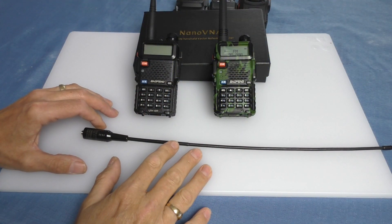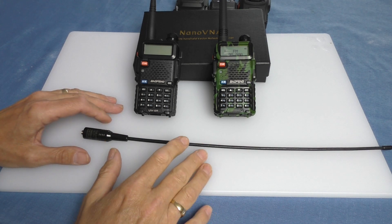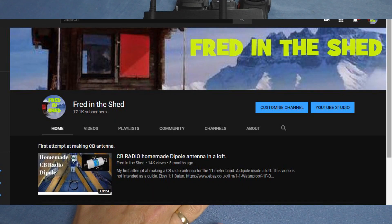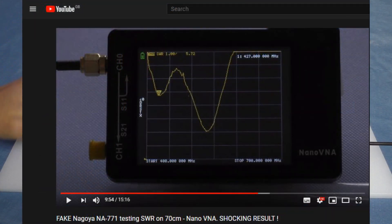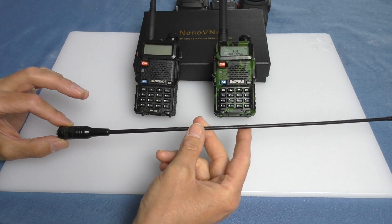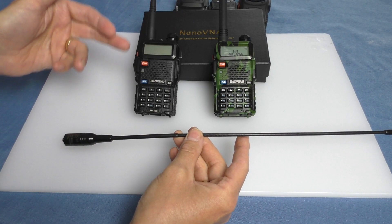Hello, welcome back to Threading the Shed 2. Over on my main channel Threading the Shed 1, I've been testing with the NanoVNA meter these Nagoya or fake Nagoya 771 antennas which you can use on UV-5R radios and similar 2-meter 70cm radios.